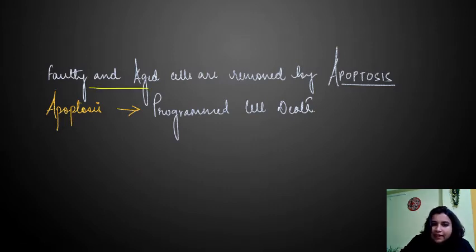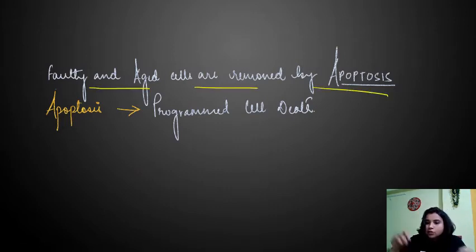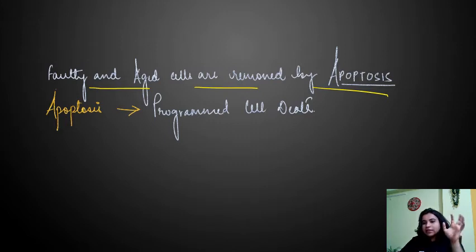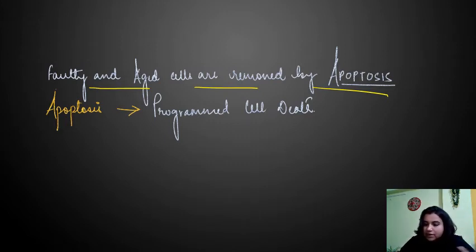Faulty and aged cells are removed by apoptosis. Whenever there is a faulty or weakened cell, that cell gets removed with the help of the apoptotic process. Apoptosis is a programmed cell death. If a cell is undergoing apoptosis, there are certain changes in the cell.